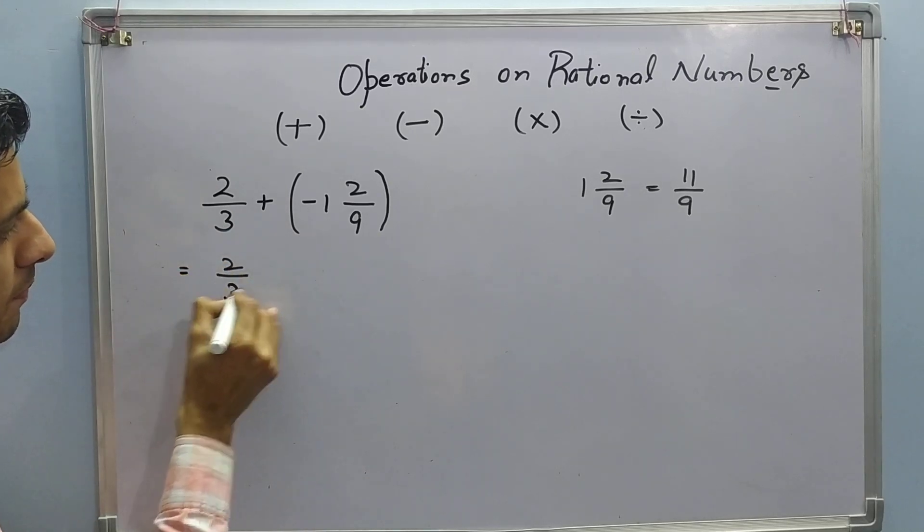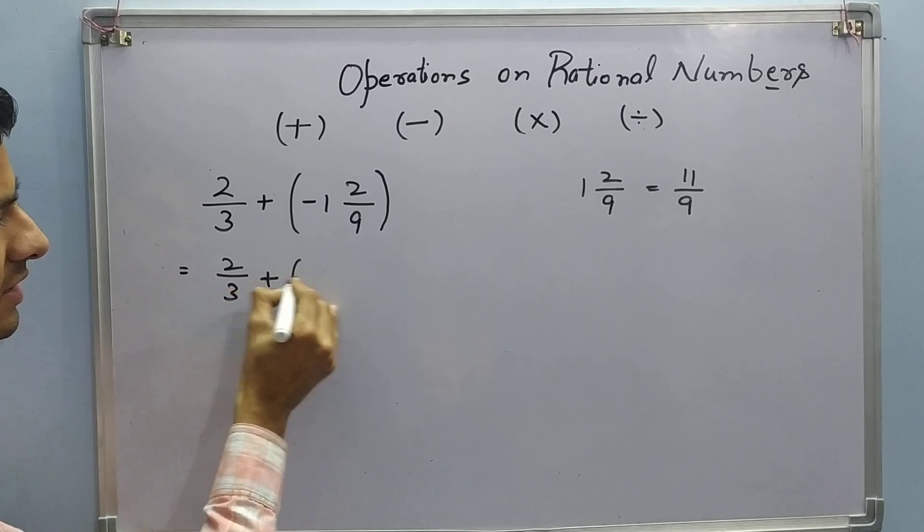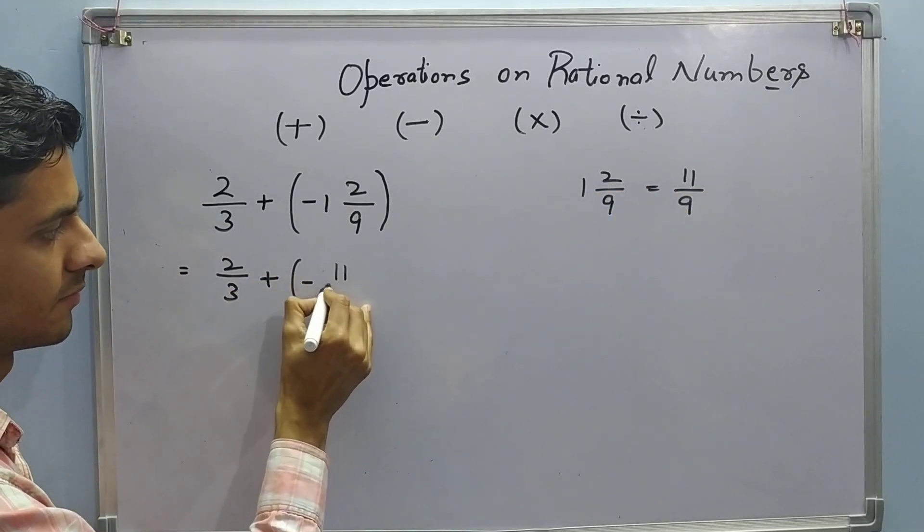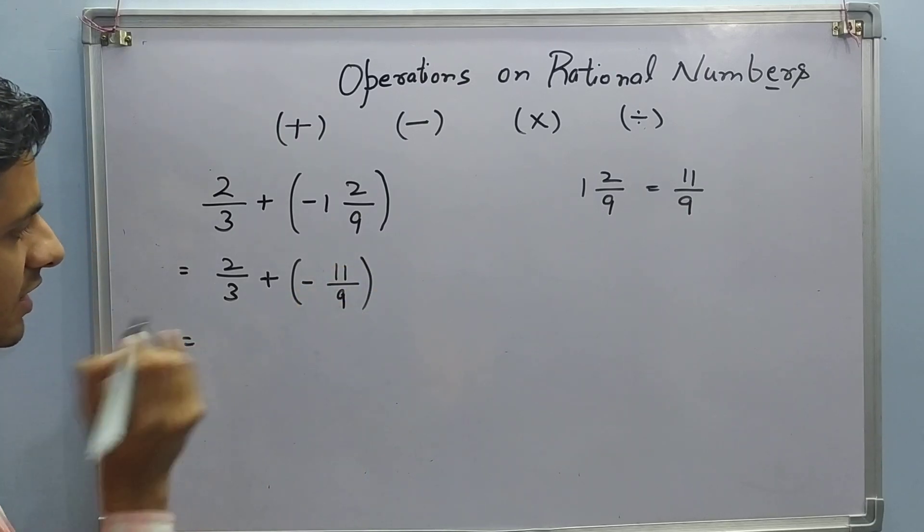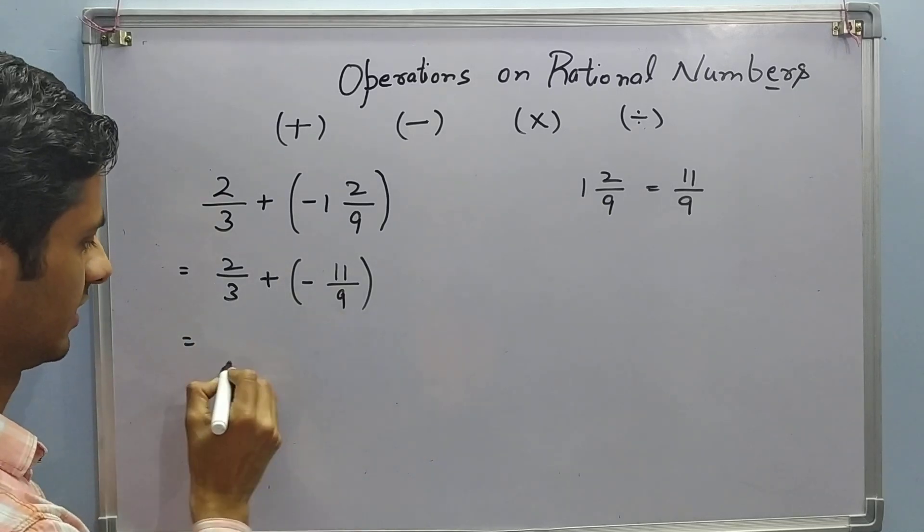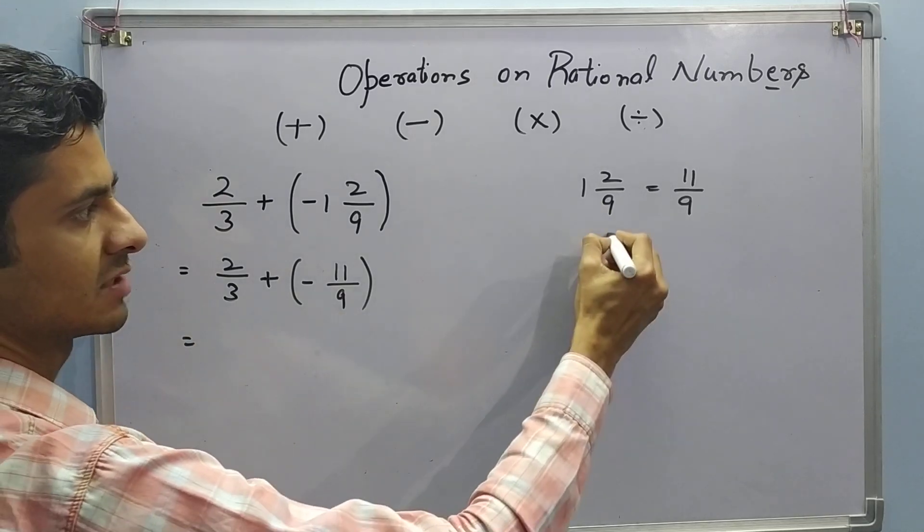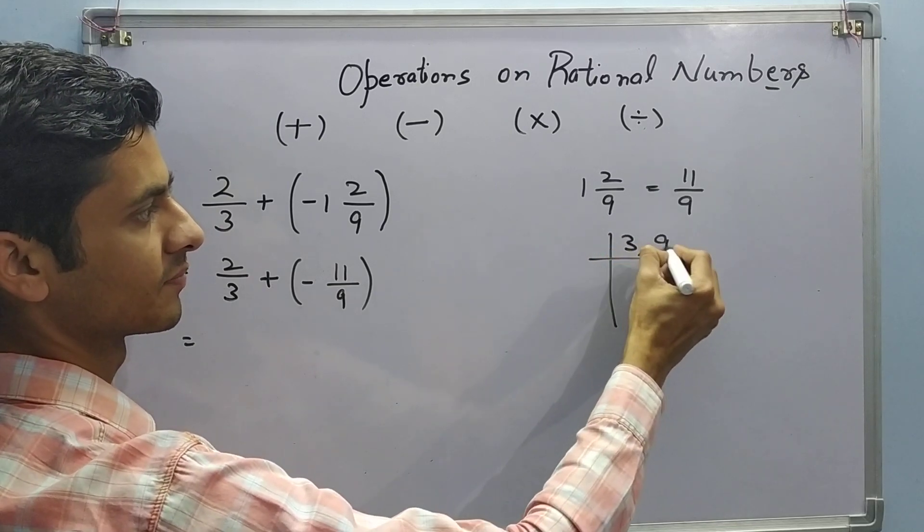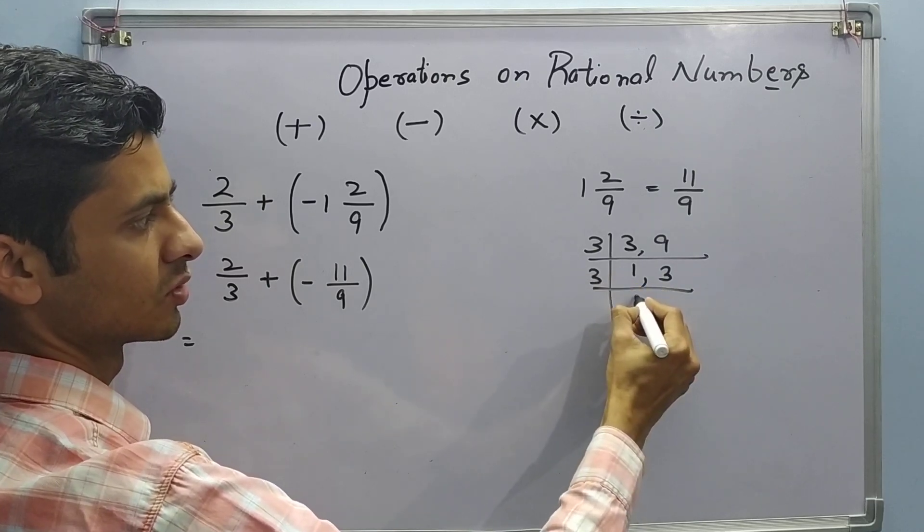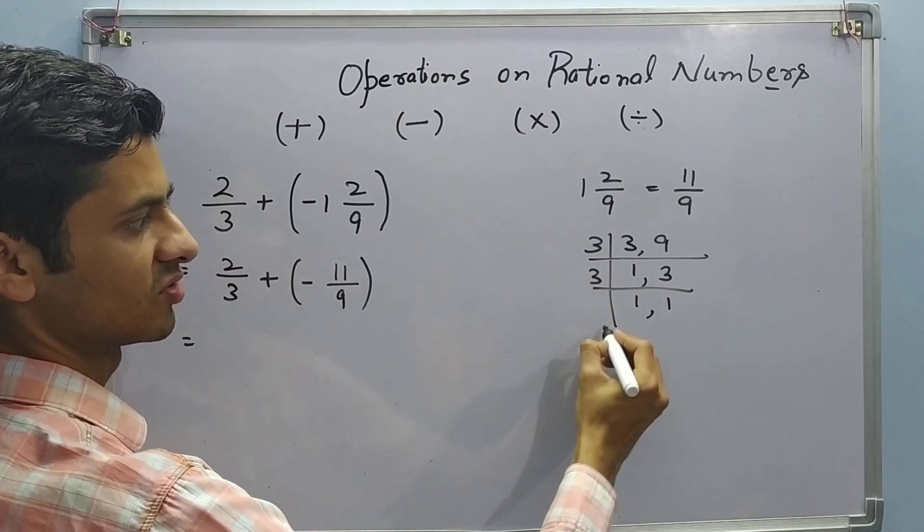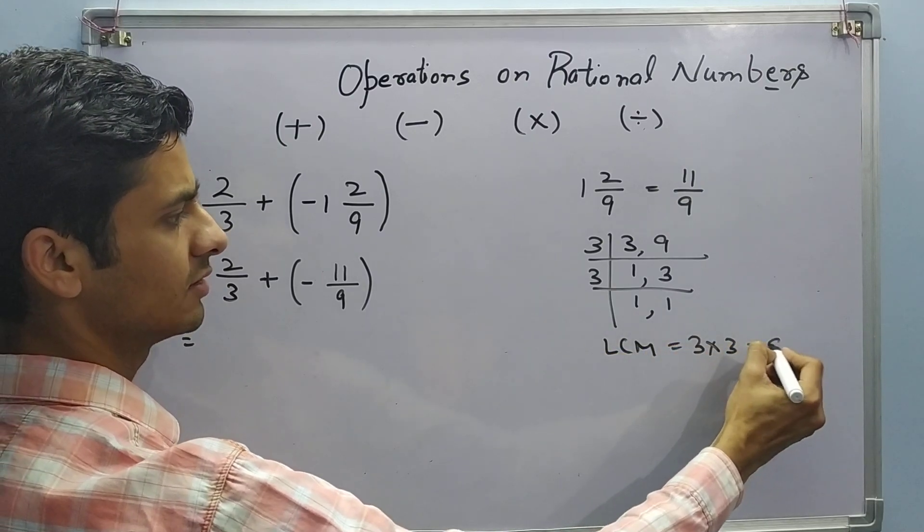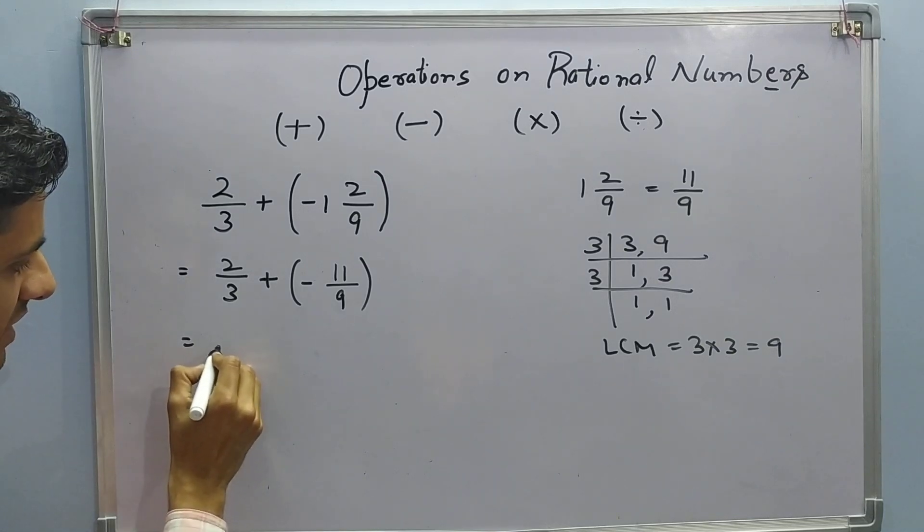2 upon 3 plus negative 1 whole 2 upon 9 becomes 11 upon 9. Then taking LCM of 3 and 9. It comes out to be LCM of 3 and 9. 3 1s are 3, 3 3s are 9, 1 3, 1s are 3. So LCM is 3 into 3 equal to 9. So here LCM is 9.